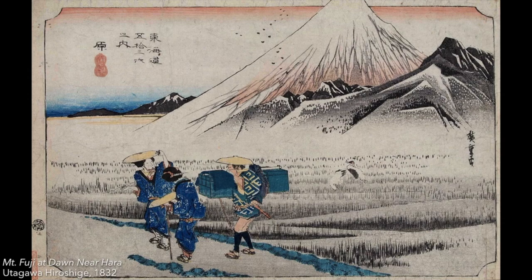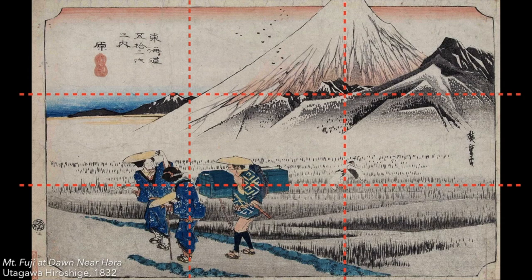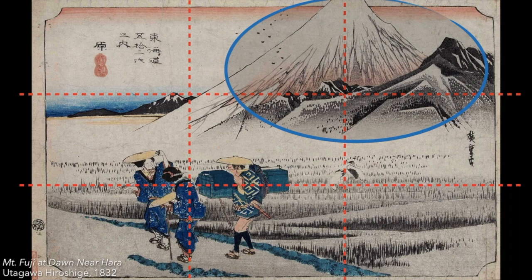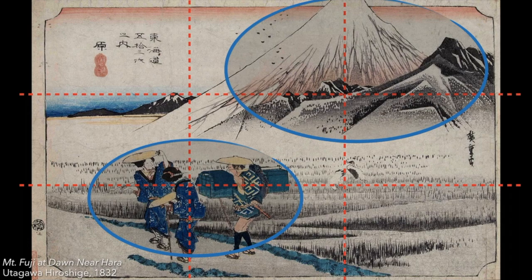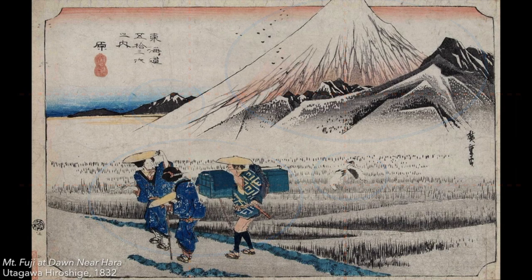Hiroshige's view of Mount Fuji at Dawn near Hara is an interesting example of an asymmetrical but balanced composition. Due to the towering nature of Mount Fuji, the composition is heavily balanced toward the right side of the image. However, looking at the rule of thirds, this asymmetrical composition isn't so off-putting because while Mount Fuji overwhelms the right and center, the figures — the focal point of the image in many ways — take up the left and center foreground. The cranes in the middle ground and the mountains in the far background also balance each other off. Thus, while the image isn't symmetrical, it still maintains a sense of balance.